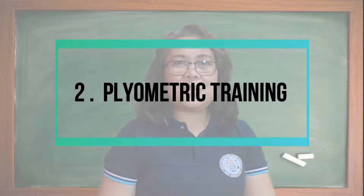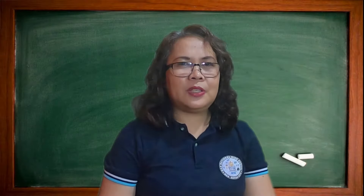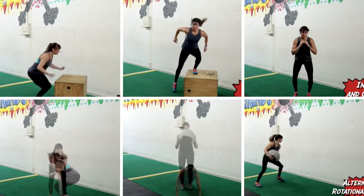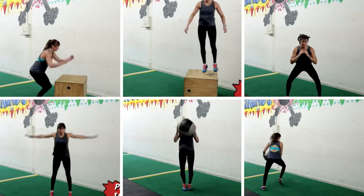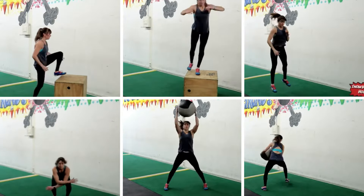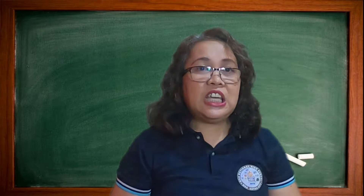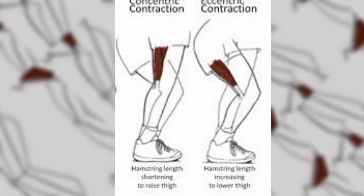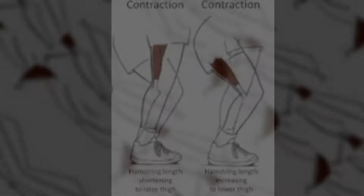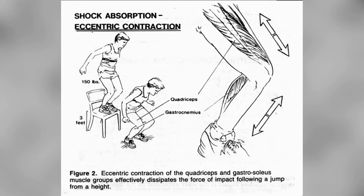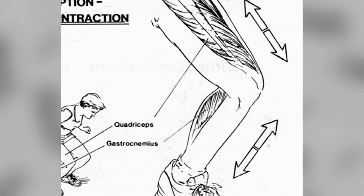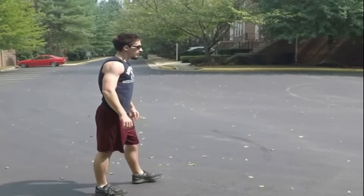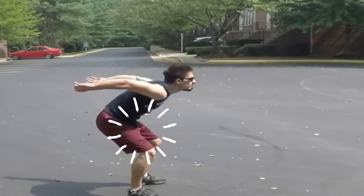Plyometric training is used to increase power and strength, which translates to higher jumps and faster sprint times. It typically involves bounding, hopping, or jumping-style exercises, but can include medicine ball or box work. Plyometric training involves an eccentric contraction where muscles lengthen under tension, followed by a concentric contraction where muscles shorten under tension. The eccentric phase or landing phase involves the preloading of the agonist muscle, and the concentric phase or take-off phase uses the stored energy to increase the force of movement, resulting in a more powerful contraction.